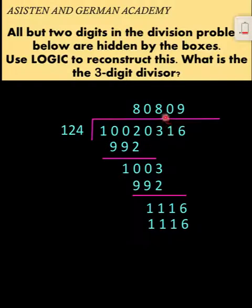So if we are going to reconstruct this division problem, this is now the exact reconstruction. And the answer to this puzzle is 124. The divisor is 124, and we accomplish this all by just using simple logic. Thank you very much, and we hope to see you again in our next video.